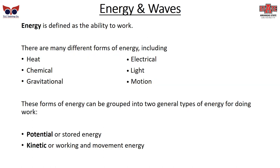Energy is the ability to do work — to get things done. Energy comes in many forms: heat energy, chemical energy, gravitational energy, electrical energy, light energy, and motion (inertia). If you flip on a light switch, you convert electrical energy into light energy. These forms of energy can be generally grouped into two kinds: potential energy — energy that is stored but not currently being used — and kinetic energy, which is working or movement energy.